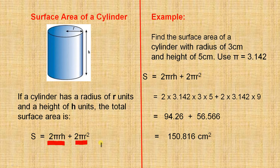For example, find the surface area of a cylinder with radius of 3 centimeters and a height of 5 centimeters. Use pi equals 3.142. So the surface area is 2 pi r h plus 2 pi r squared, which is 2 by 3.142 by 3 by 5 plus 2 by 3.142 by 9. Because the radius is 3 and 3 squared is 9. When you simplify all that, the surface area is 150.816 square centimeters.